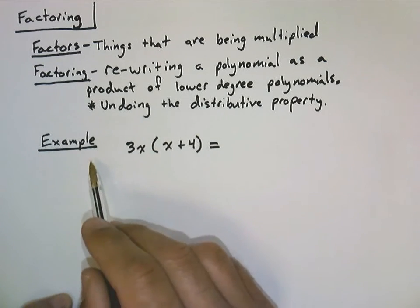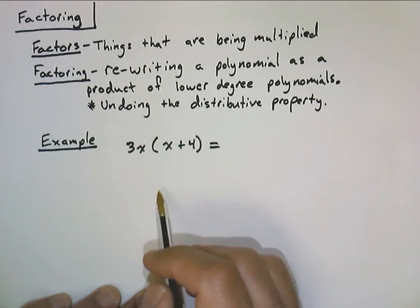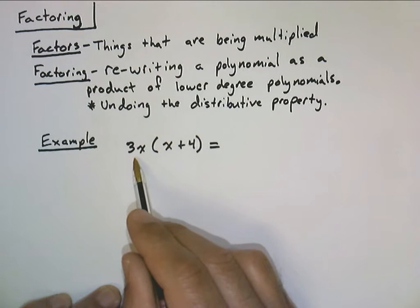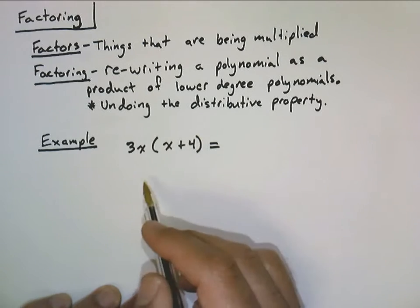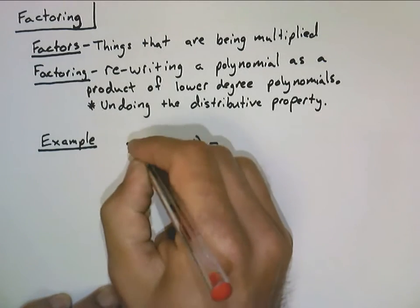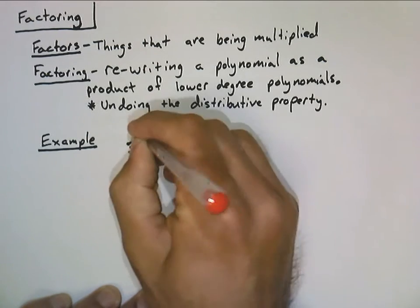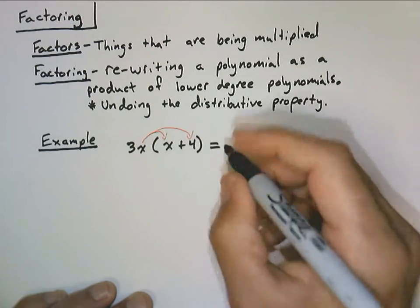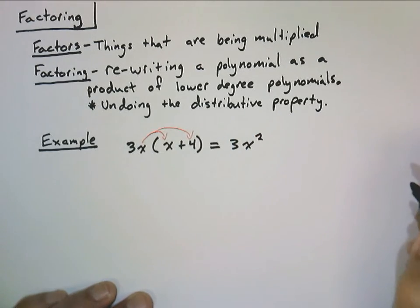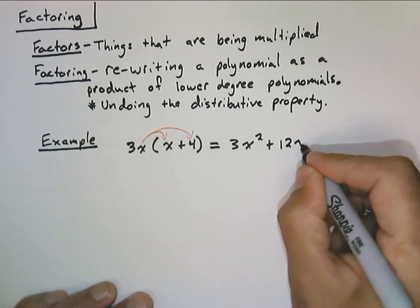So just to look at how this works, we're going to first look at this example: 3x times the quantity x plus 4. Now if we're simplifying this, we're going to apply the distributive property. Because if we have parentheses, this is not simplified. So simplifying, we would take this factor of 3x and distribute it to both the x and the 4, giving us 3x squared plus 12x.